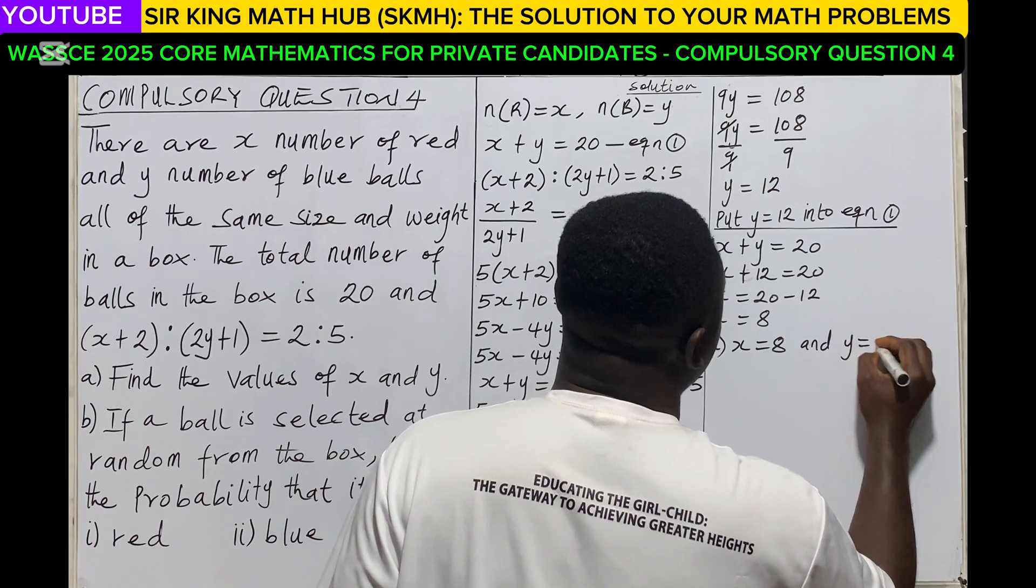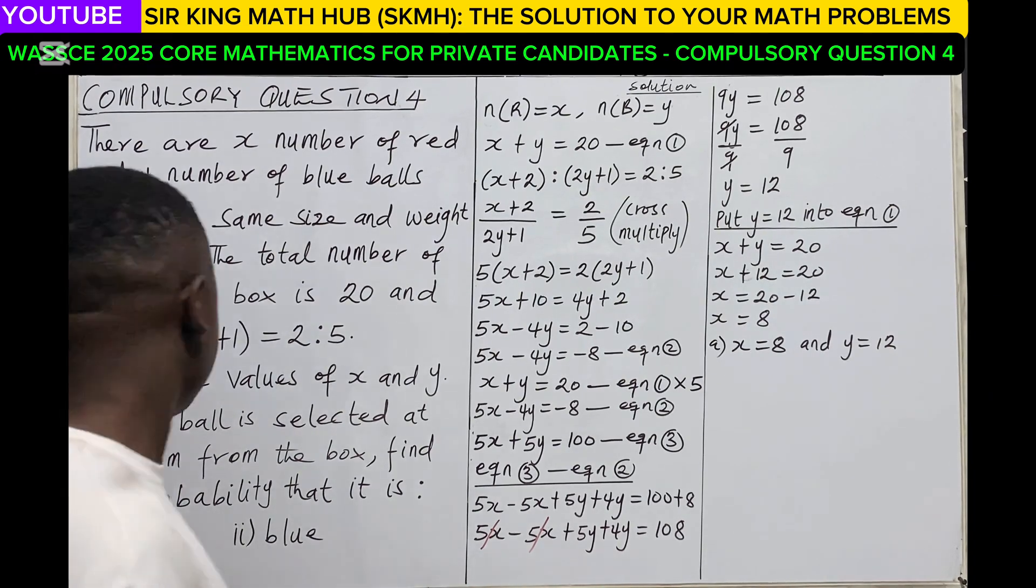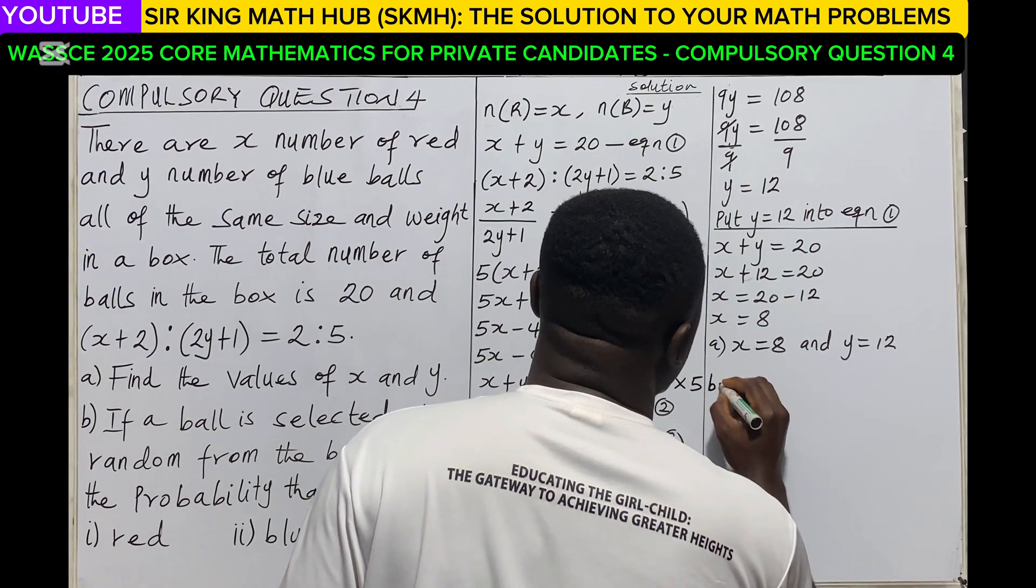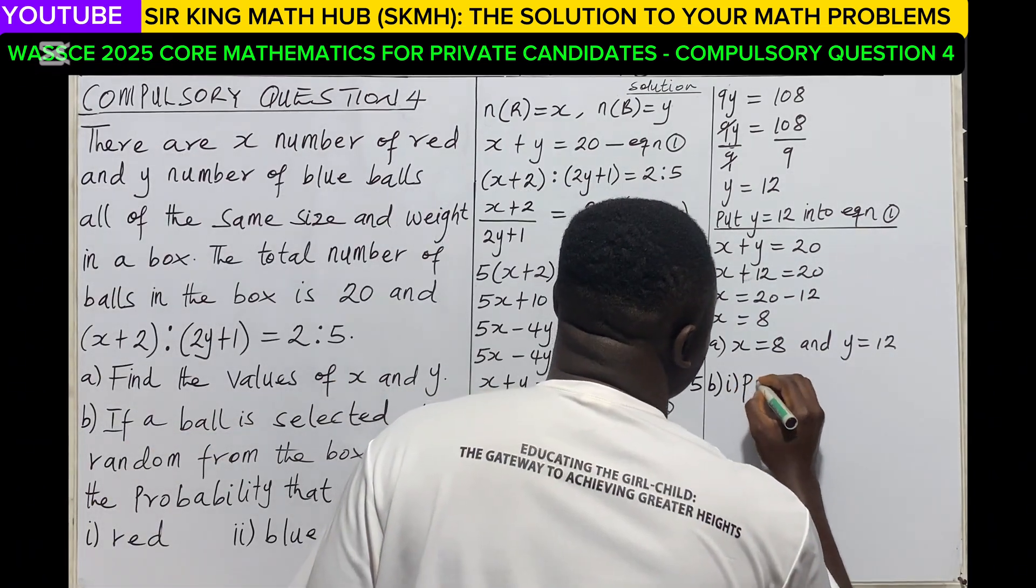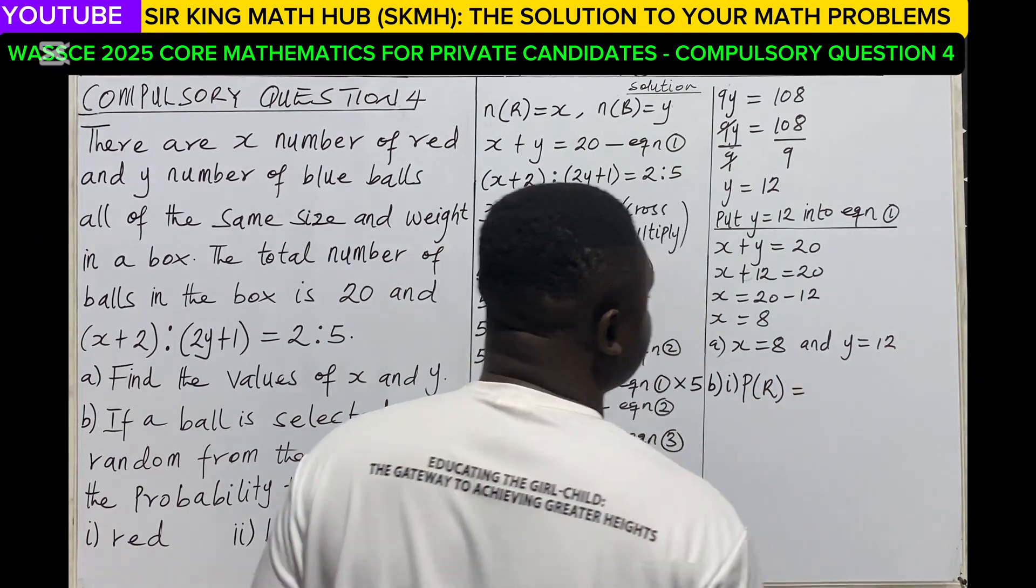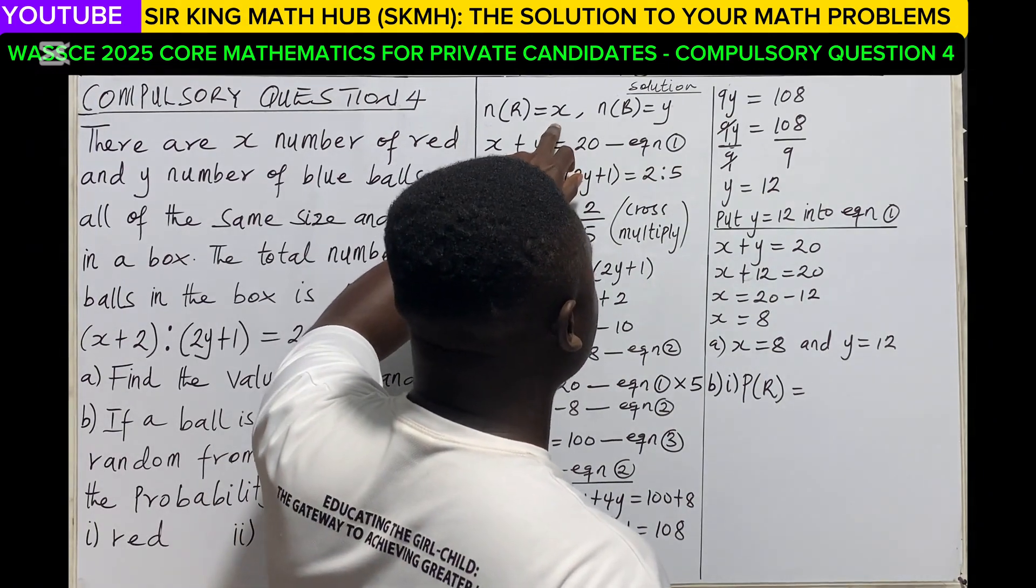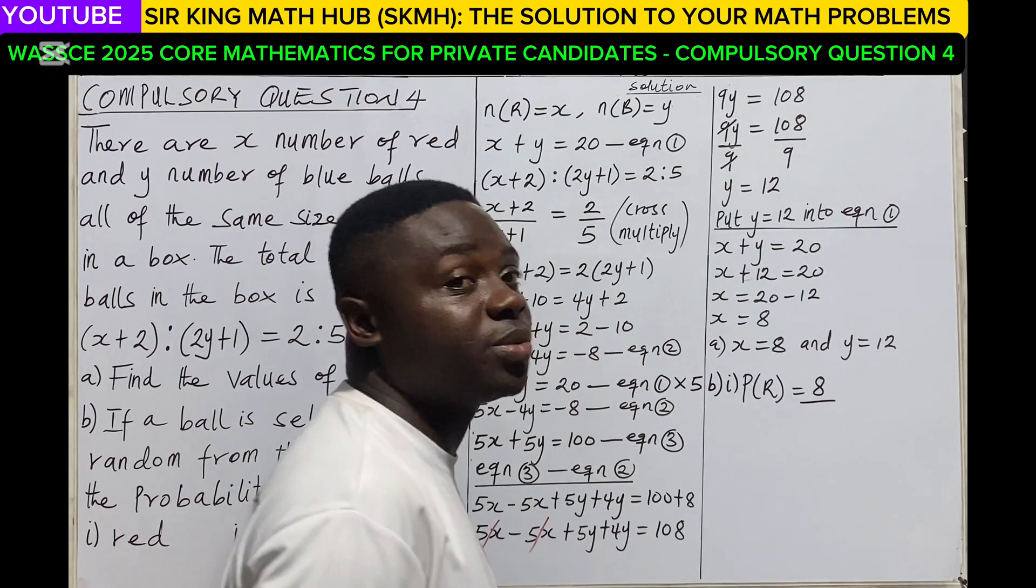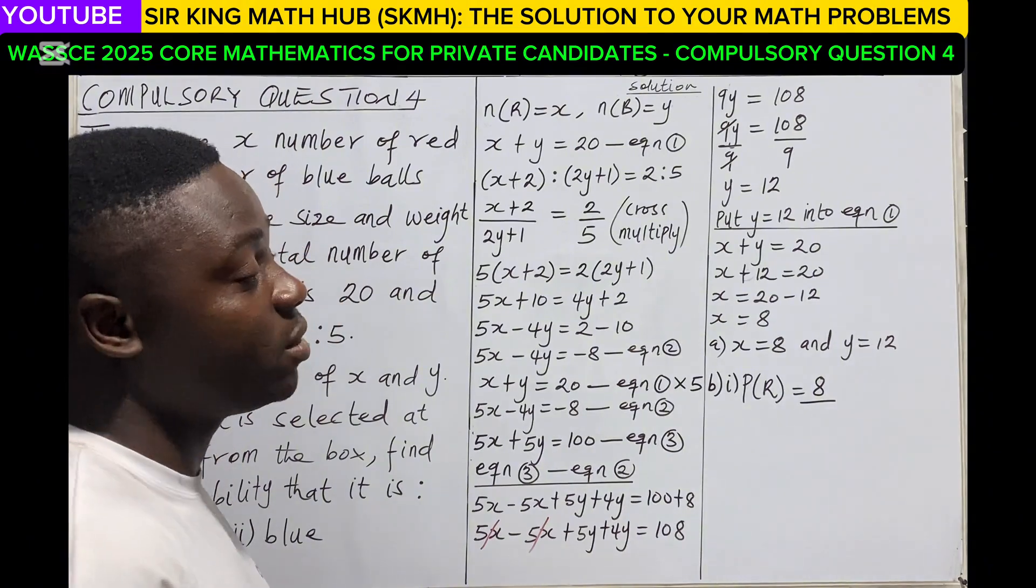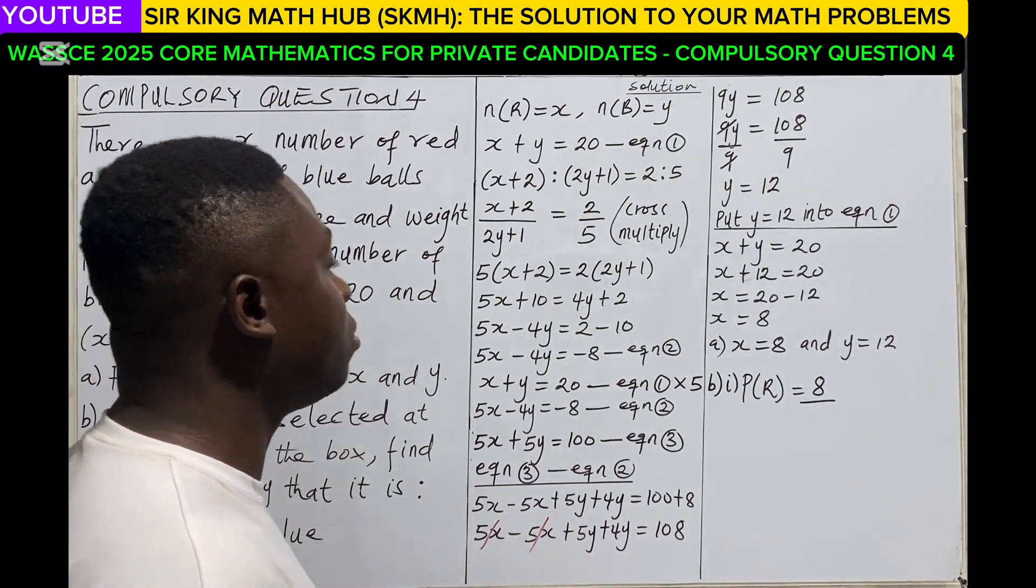Now for part B, if a ball is selected at random from the box, we have to find the probability that it is (i) red. The probability that the ball is red will be the number of red balls. Remember, the number of red balls was represented as x. So in this case, the number of red balls is 8 divided by the sample space. So the sample space represents the total number of balls inside the box, and we're told that there are 20 balls altogether in the box.